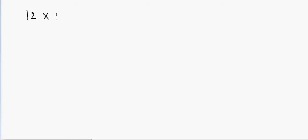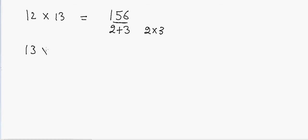We'll have another metric which can be used for faster calculation. Here we are talking about multiplying two numbers which are less than 20. For example, if I have to multiply 12 and 13, what I'll do is first I'll say 2 plus 3, which is 5, and then I'll multiply 2 and 3, which is 6. The answer will be equal to 156.